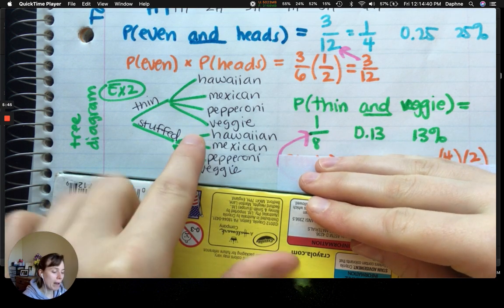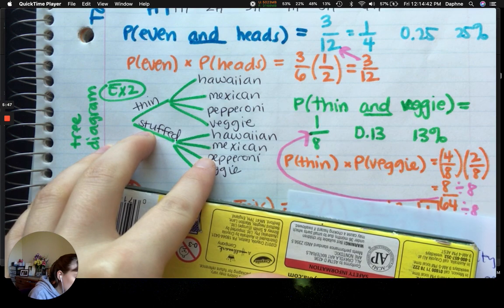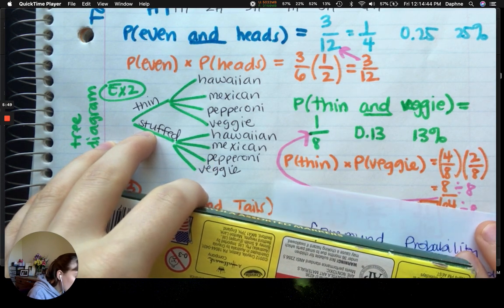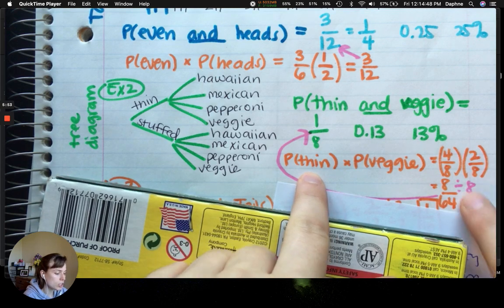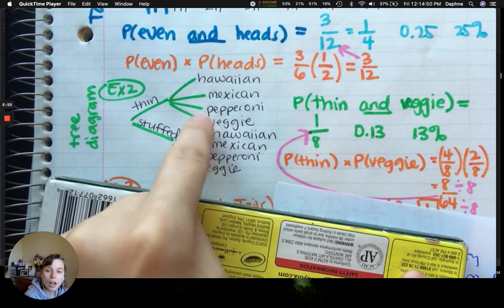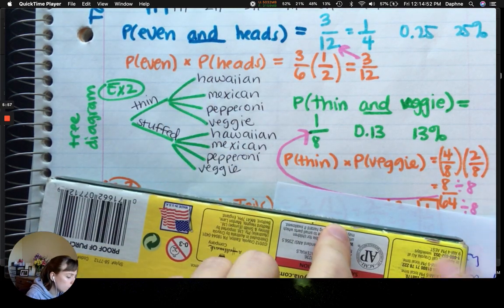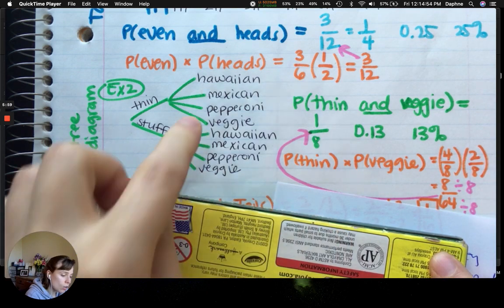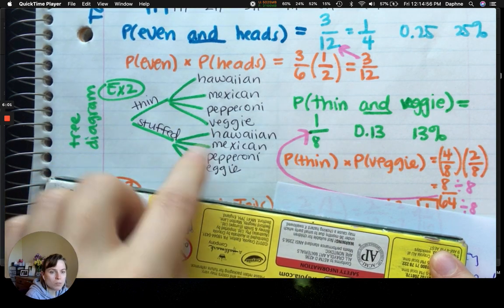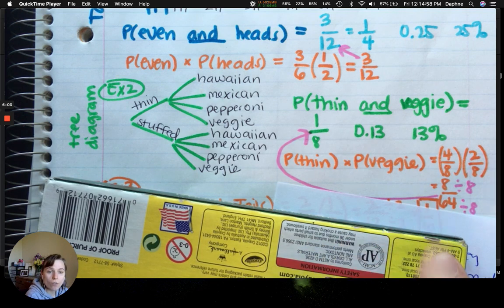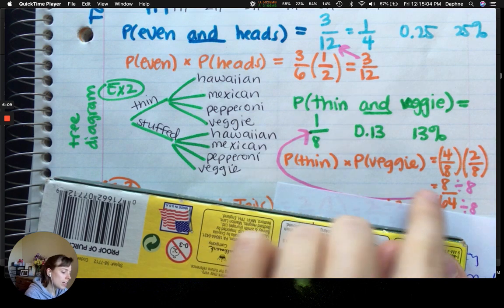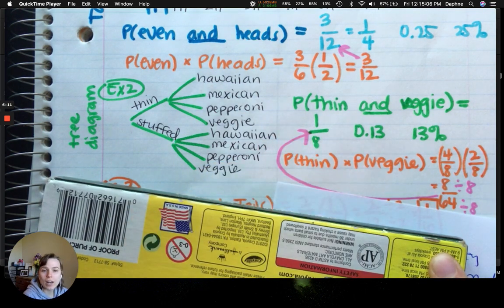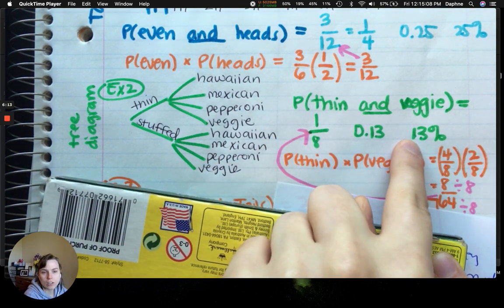If I did the compound method, I would be finding the chance of it being thin by itself, which is 4 eighths, because 4 out of the 8 are thin crust. 2 out of 8 will be veggie. Multiplying those together, you get 8 sixty-fourths. I can divide the 8 by 8, and the 64 by 8, numerator and denominator. That simplifies me back up to my 1 eighth, and I still end up with the 13%.